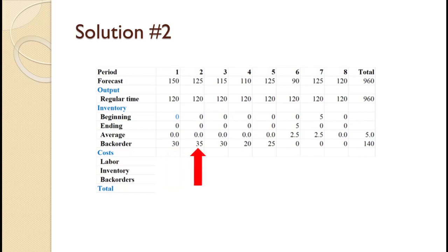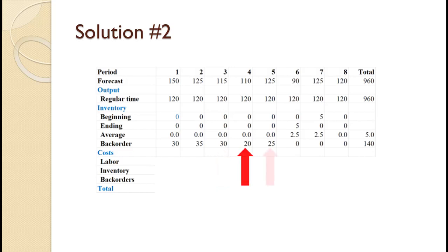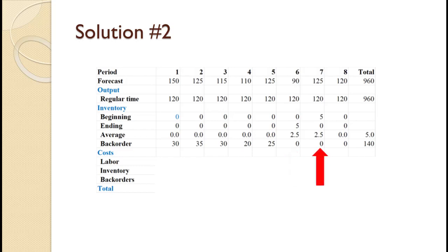For period 2, demand exceeds production by 5 units so ending inventory remains 0 and back orders increase by 5. For period 3, production exceeds demand by 5 units so back orders drop to 30. For period 4, production exceeds demand by 10 units so back orders drop to 20. For period 5, demand exceeds production by 5 units so back orders rise to 25. For period 6, production exceeds demand by 30 units, eliminating the back order and raising ending inventory to 5, yielding an average inventory of 2.5. For period 7, demand exceeds production by 5 units so ending inventory drops to 0 and inventory averages to 2.5. In period 8, production equals demand so inventory remains at 0 with an average of 0.